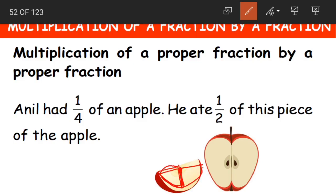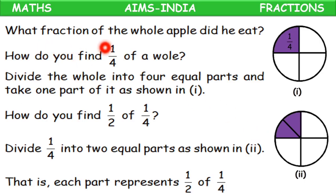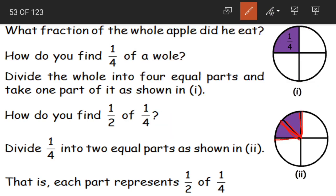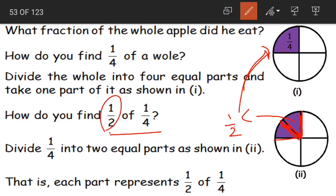From this 1/4 piece, he ate half. Now, what fraction of the whole apple did he eat? Consider this circle as our apple. It was divided into 4 parts and Anil had 1/4 of it. From this he ate half — that means this part was divided into 2 parts and he ate only 1 part. How will you find out 1/2 of the total 1/4? He ate 1/2 of 1/4.